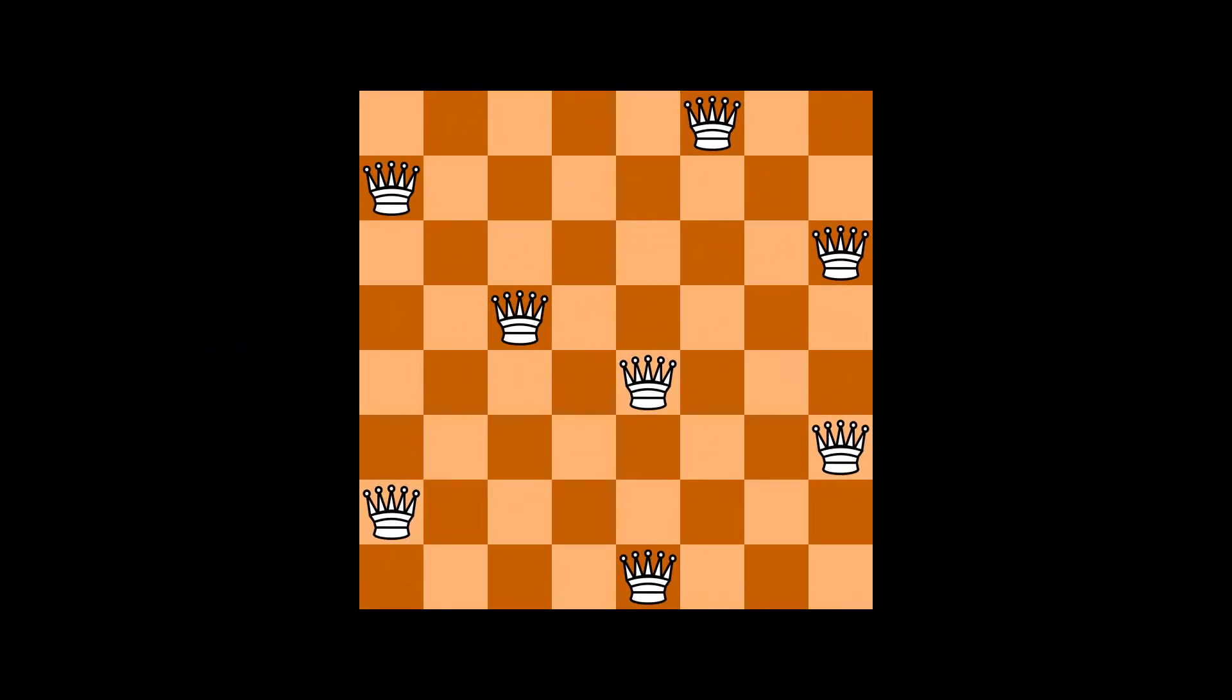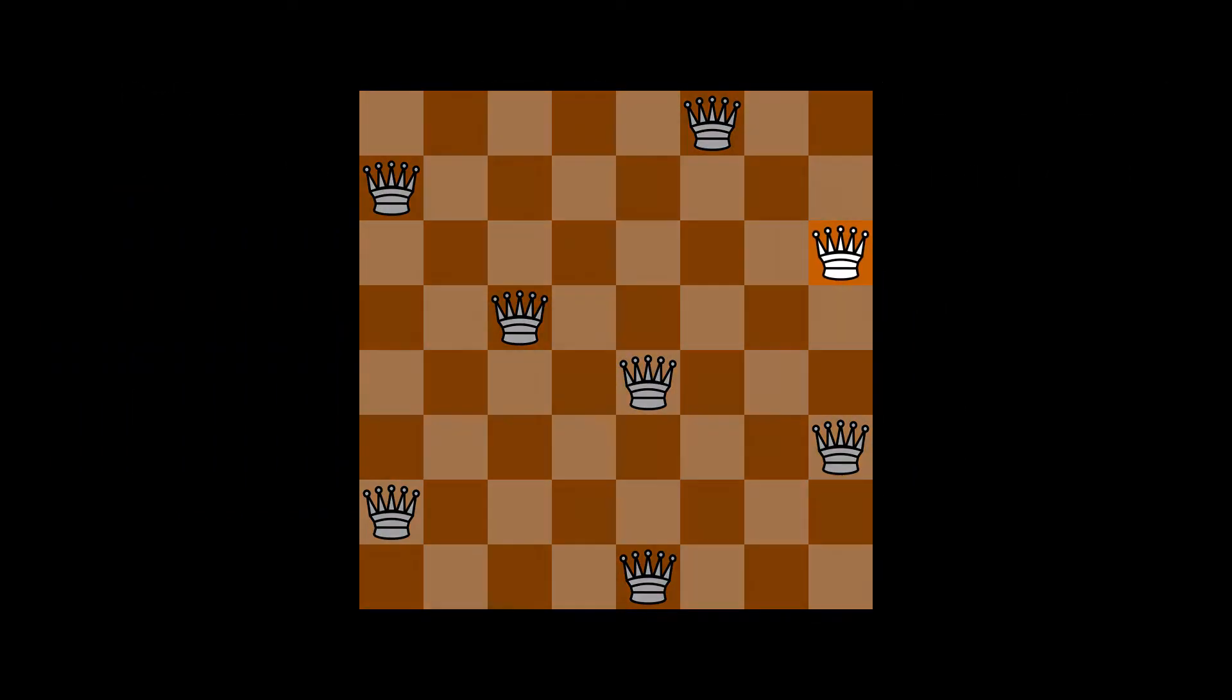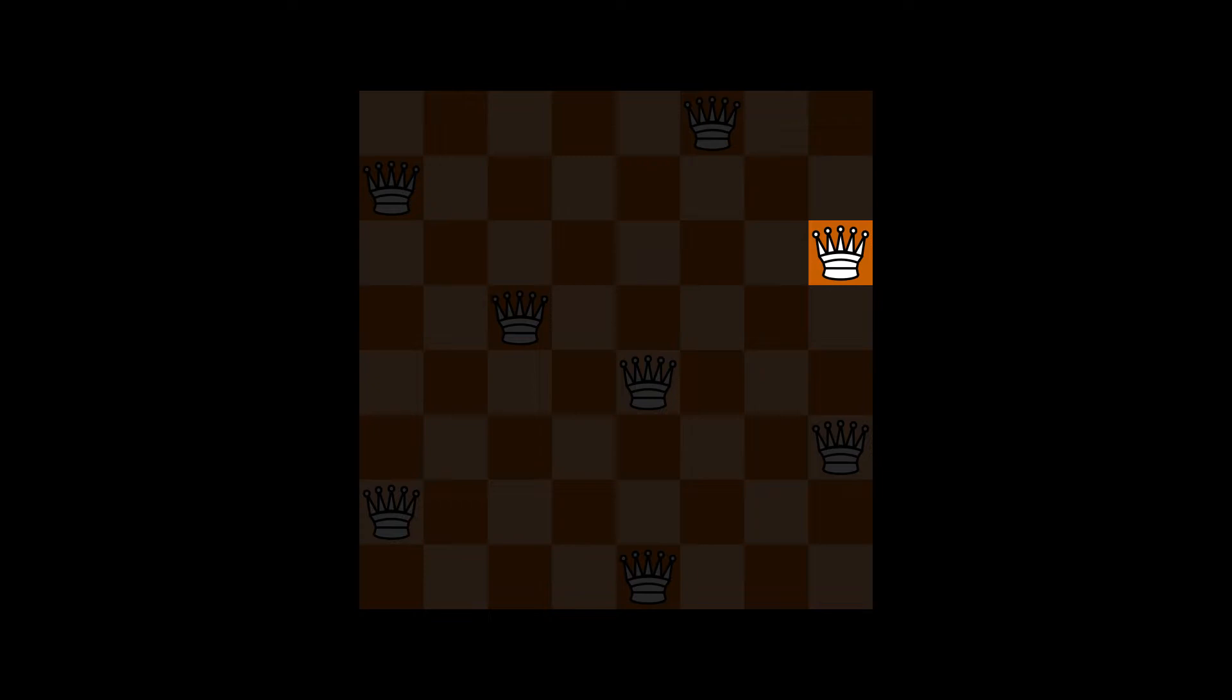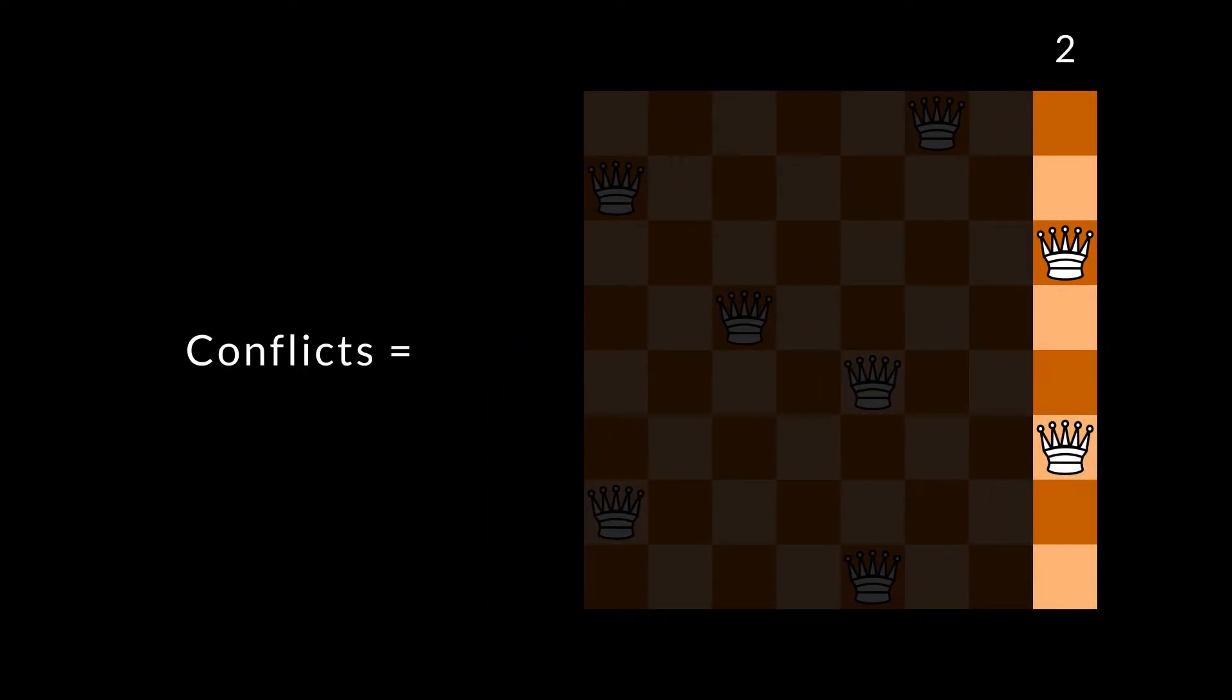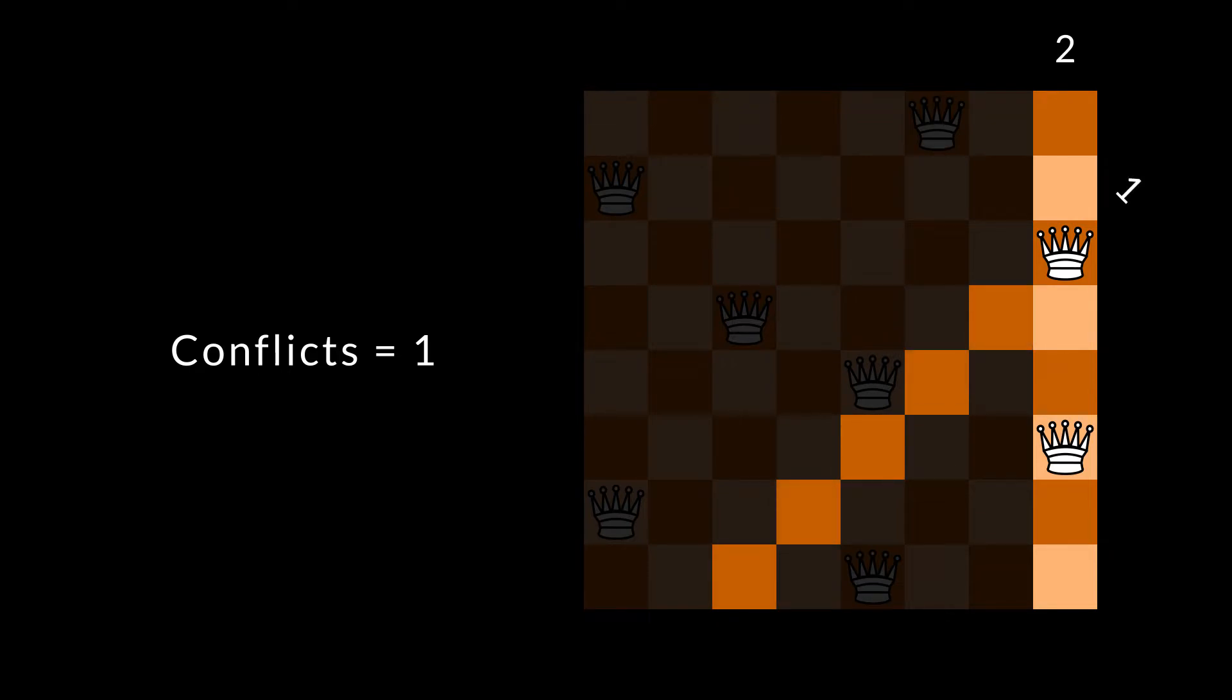Let's look at an example. How many conflicts is this queen involved in? We look up the number of queens in the column, which is two, including the queen itself. So it must be involved in one conflict in this column. Next, we look up the number of queens in this diagonal. It is one, so there are no conflicts here. In the other diagonal, there are two queens, so we add an additional conflict for a total of two conflicts.